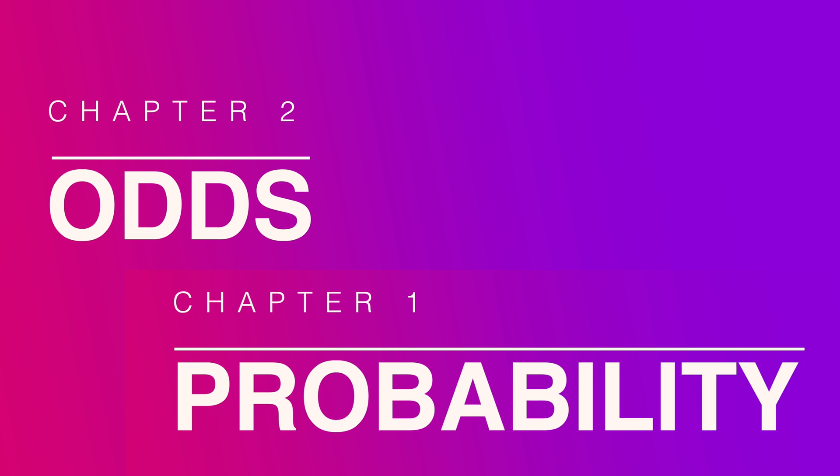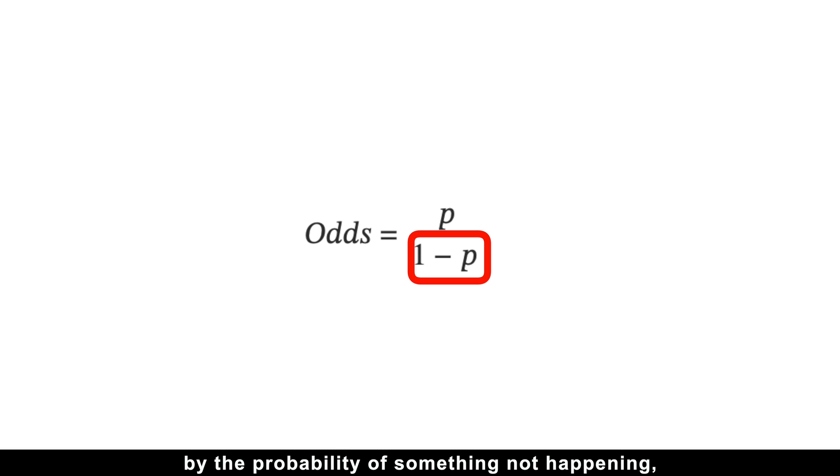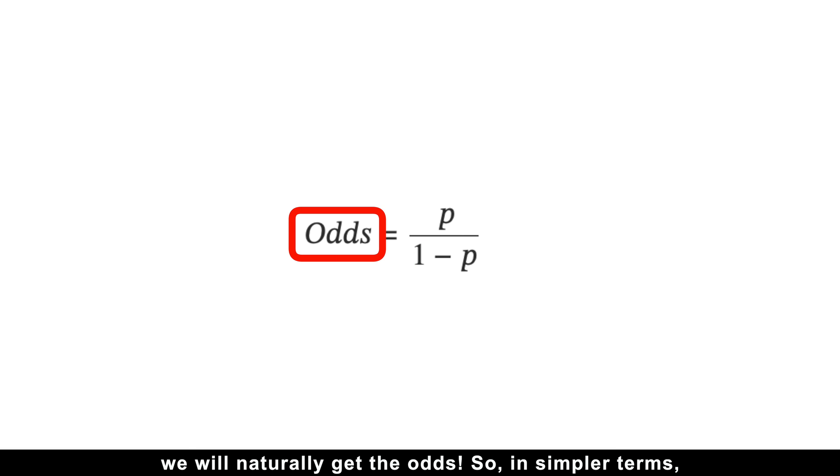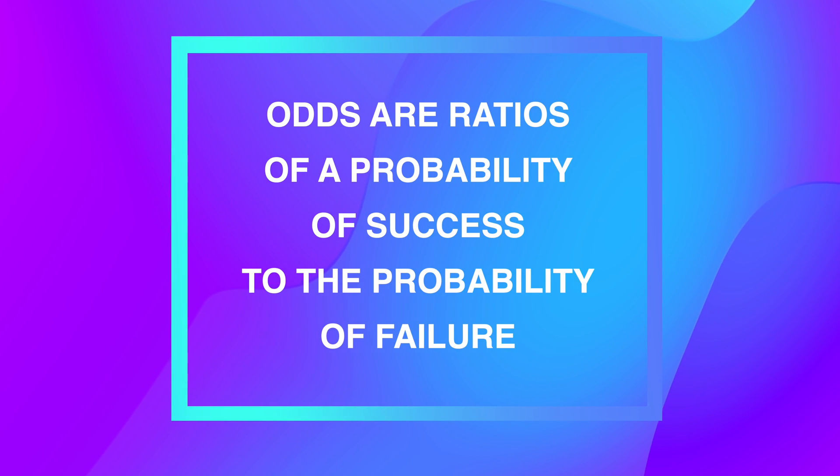The good news is that understanding odds is easy because odds only rely on probability, which we just learned. Check this out: if we divide the probability of something happening by the probability of something not happening, we will naturally get the odds. So in simpler terms, odds are ratios of a probability of success to the probability of failure.